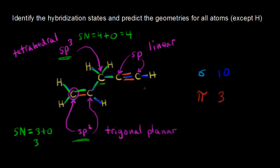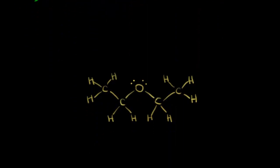And then finally, let's do it for this carbon right here using steric number. Steric number is equal to number of sigma bonds plus number of lone pairs of electrons. There are two sigma bonds around that carbon and zero lone pairs of electrons. A steric number of two means I need two hybridized orbitals, and that's what sp hybridization gives you. Notice I excluded hydrogen here, because hydrogen is only bonded to one other atom, so there's no real geometry to talk about.